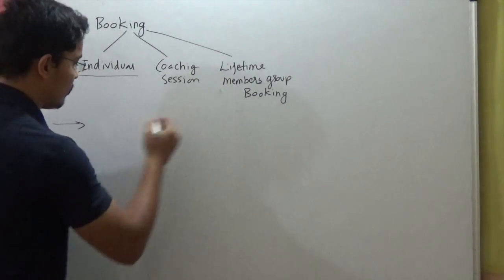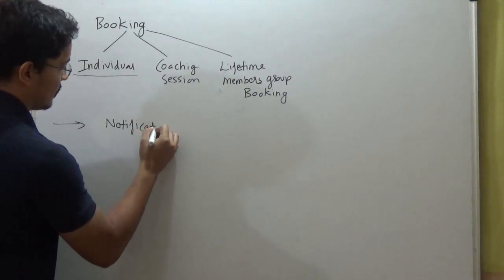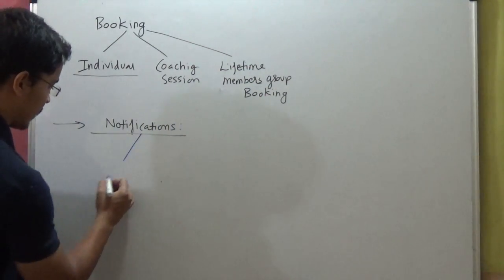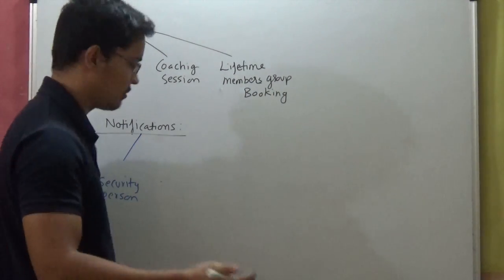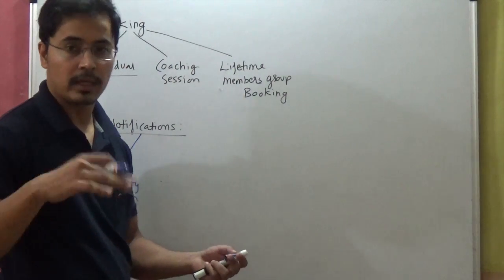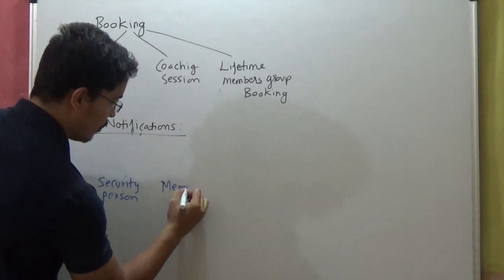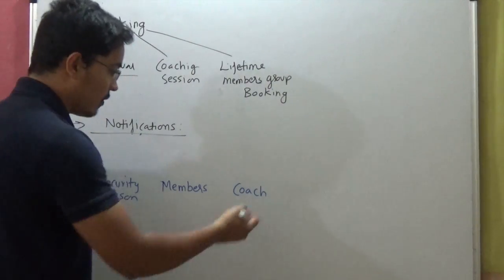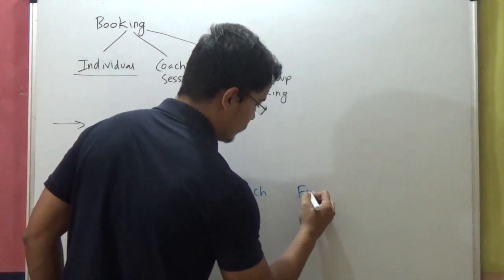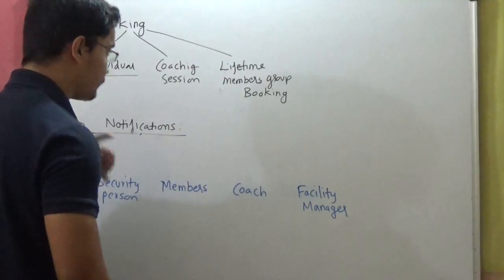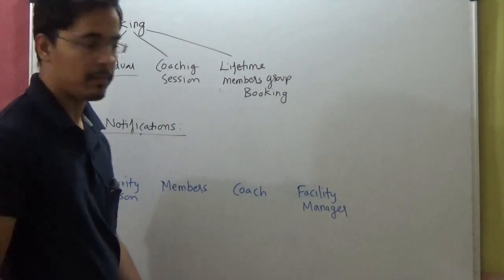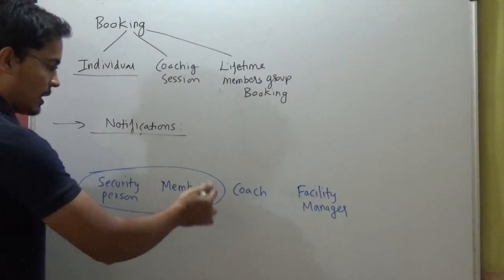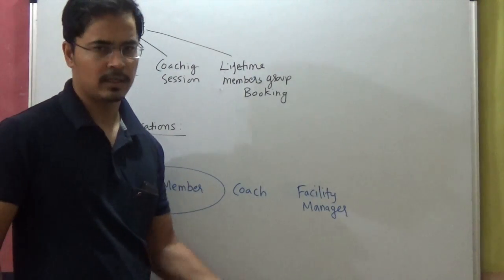In the scenario of all these three bookings, we want to send notifications about the details of the booking. To whom can we send this notification? We can send this notification to the security person present on the court, who can permit or not permit the entry of the members; the member itself who has done the booking; then we have a coach. In case of individual booking by members, we only need to send notification to the security person and the member itself, because the coach is not involved and the facility manager doesn't need to be bothered.